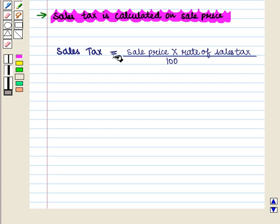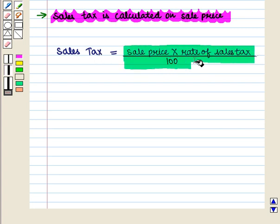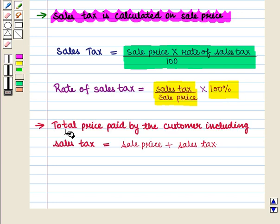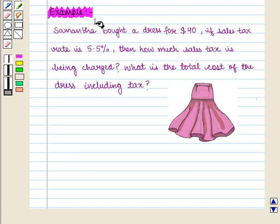Sales tax is given by: sale price multiplied by rate of sales tax, divided by 100. The rate of sales tax is given by: sales tax divided by sale price, multiplied by 100%. The total price paid by the customer including sales tax is given by sale price plus sales tax. Let us consider an example.